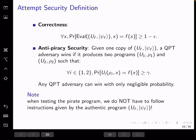And next, we define antipiracy through a security game. A quantum polynomial time adversary is given one copy of the authentic program. Then the adversary tries to produce two pirate programs and gives to the challenger. It wins if both of these programs evaluate the function correctly with large enough probability over the input distribution correlated with the function.